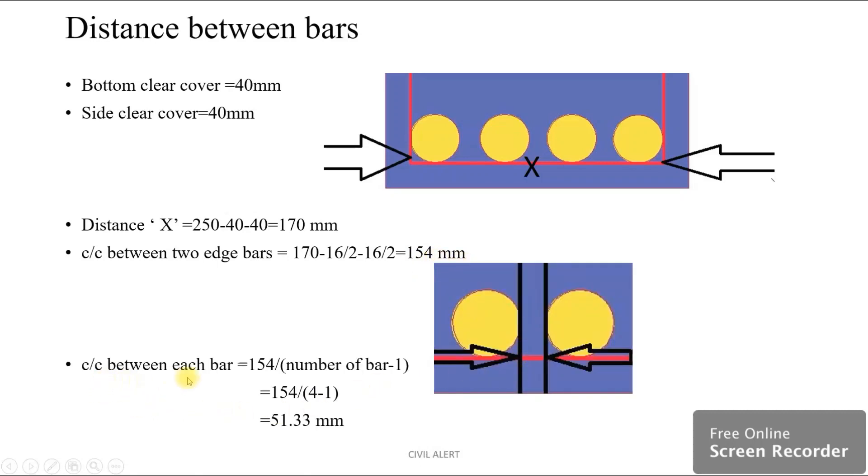The center-to-center distance between each bar in the middle equals 154 divided by (number of bars minus 1), which is 154 divided by (4 minus 1), equal to 51.33 mm.